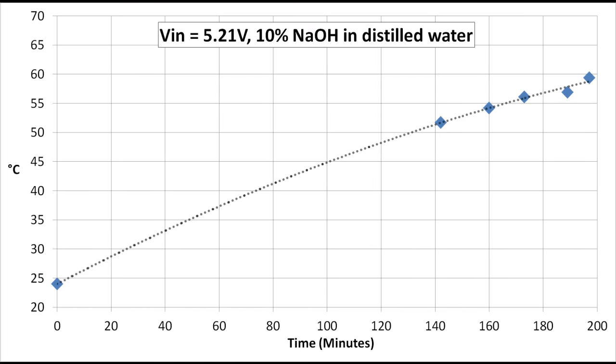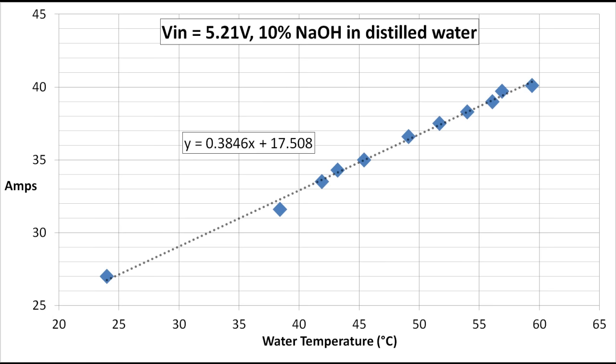Here's a graph of the temperature versus time. After three hours of running, the electrolyte reaches nearly 60C. And here's a graph of amperage versus temperature. At room temperature, we start off just a hair above 25 amps, but at 60C, we're over 40 amps.